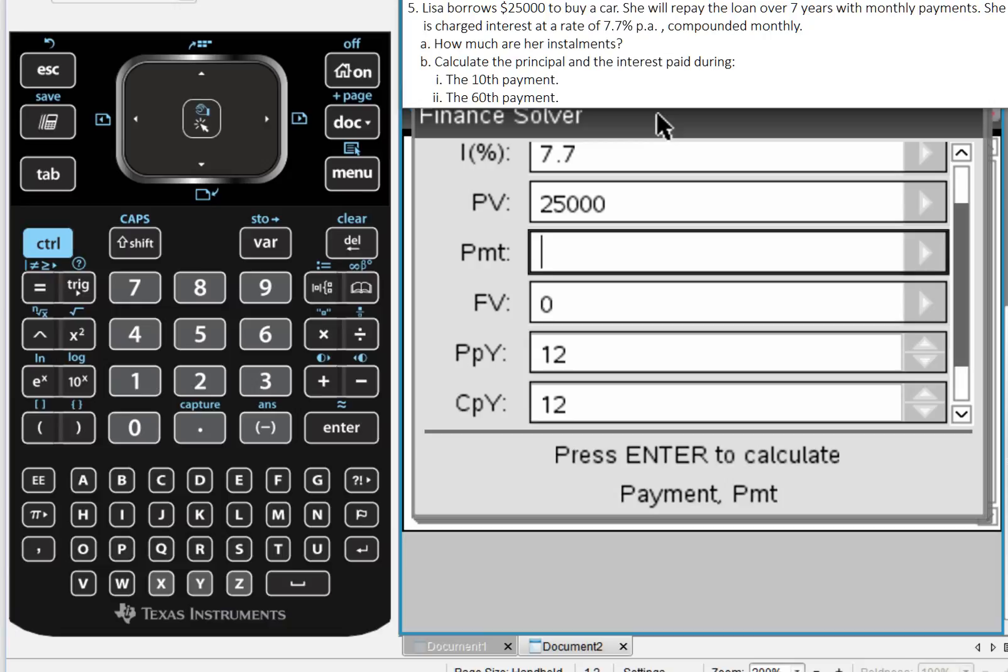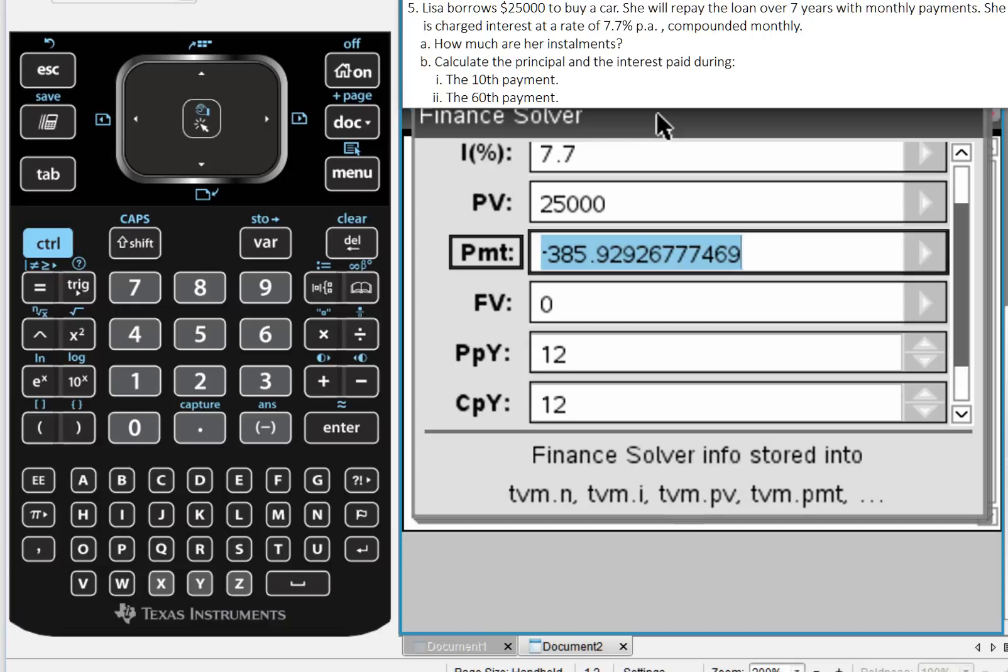Let's figure out, how much are her installments? So Lisa is paying $385.93 per month. So now we know how much Lisa is paying every month.